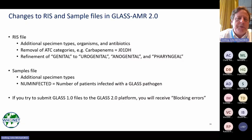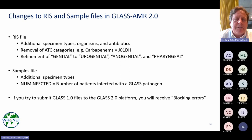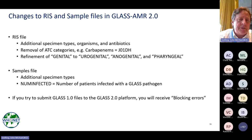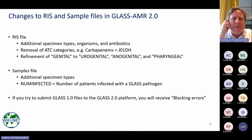A few additional data-oriented points: the RIS file — the antibiotic resistance file — now has more specimen types, organisms, and antibiotics. Previously WHO requested statistics not only on imipenem and meropenem, but also on the ATC category J01DH carbapenems. In GLASS 2.0, these ATC categories are no longer recognized. If you try to submit GLASS 1.0 files to the GLASS 2.0 platform, you will get blocking errors because the ATC categories are no longer accepted.